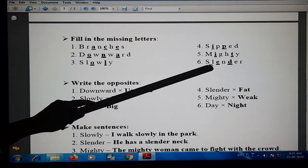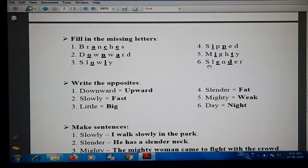Then number six, slender: S, L, E, N, D, E, R. So the dashes are on E and D.